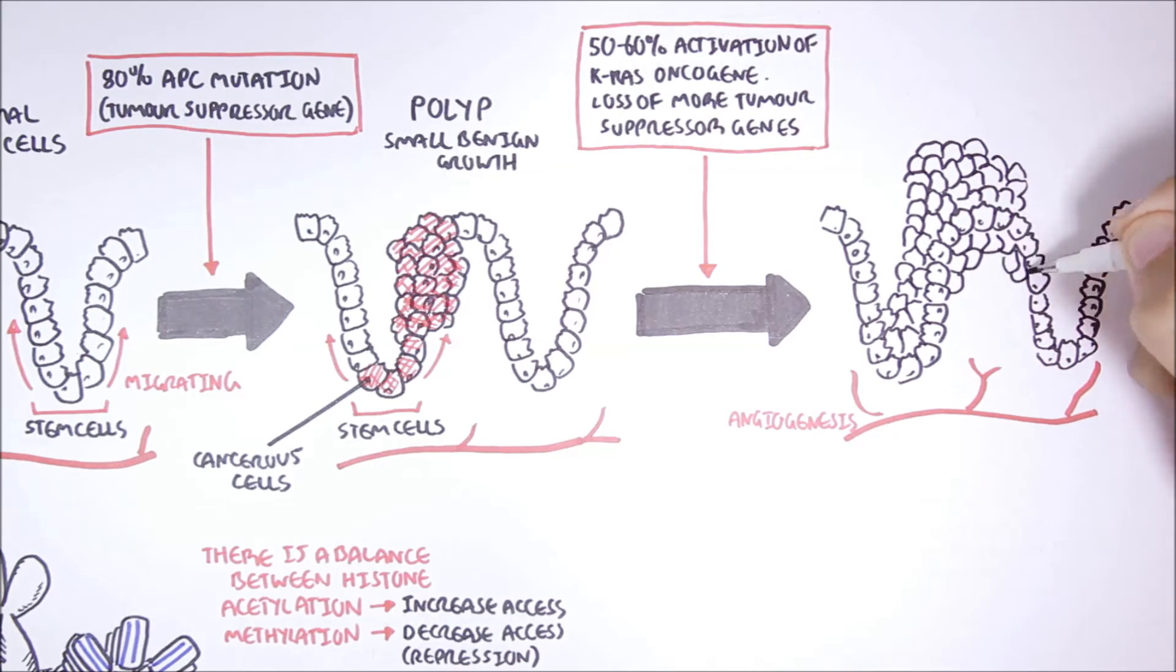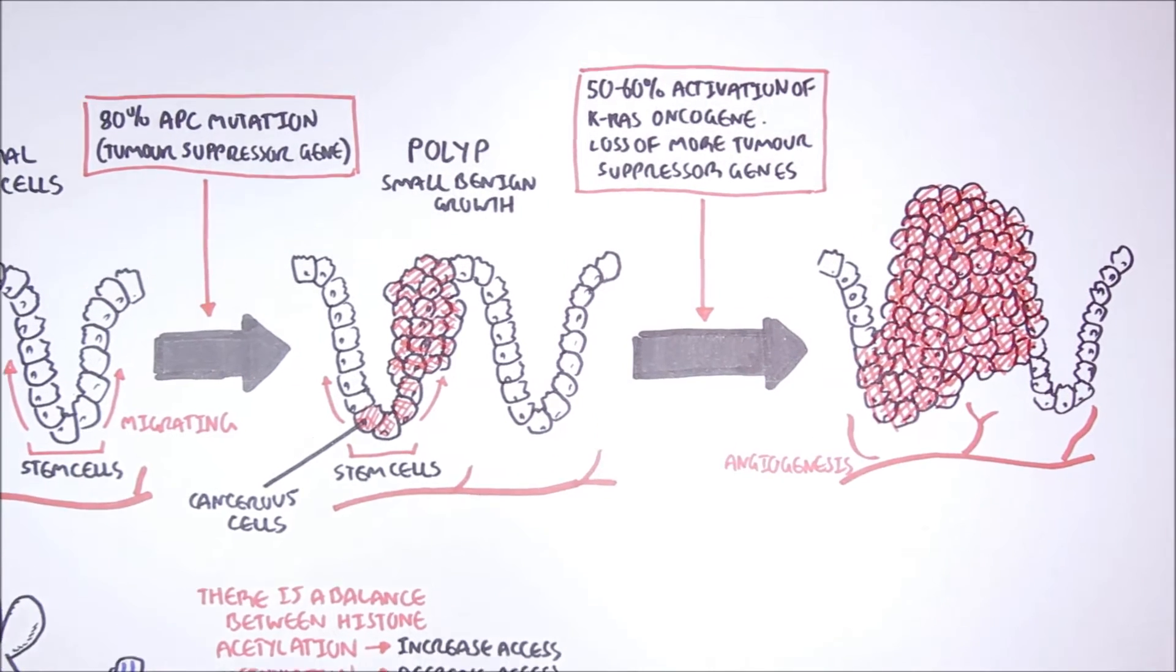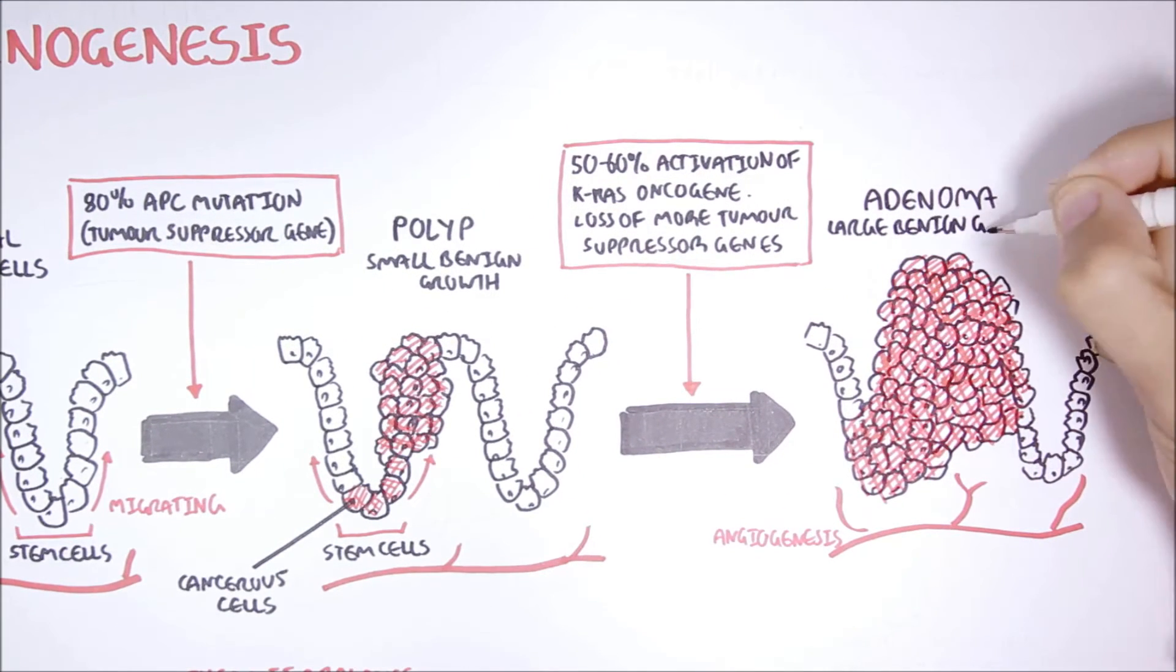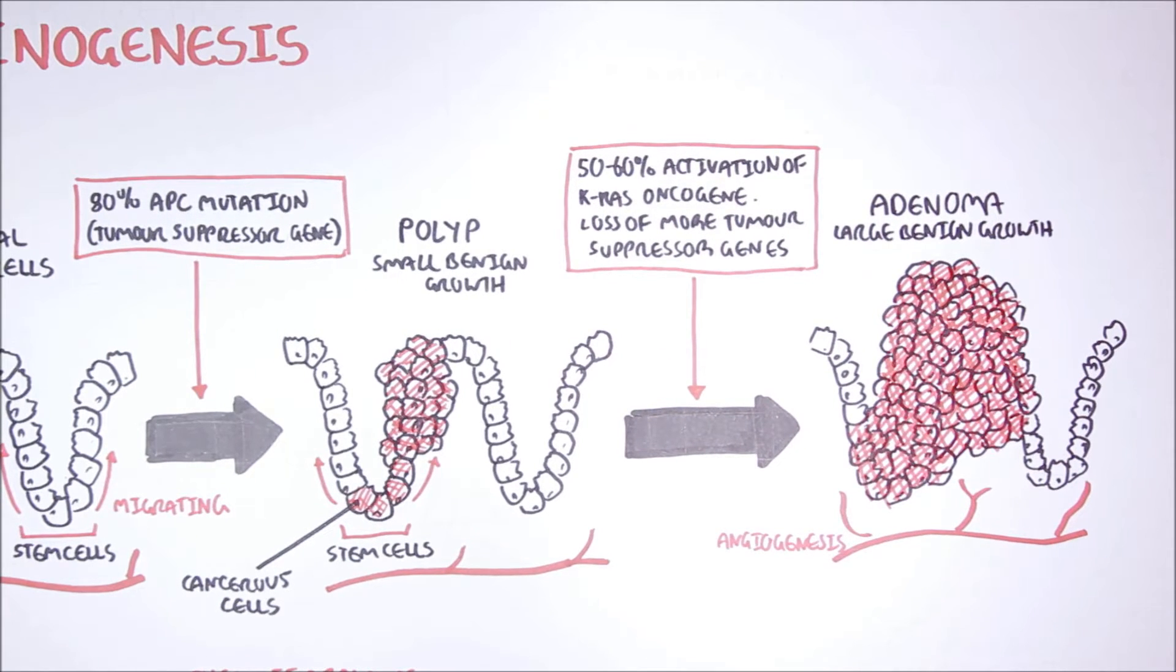The cells will begin to proliferate. This will create an adenoma, which is a larger benign growth. During this time, as the cells keep dividing, there needs to be more blood supply in order to feed the growing tissue. So, angiogenesis, which is formation and maturation of blood vessels, occur.